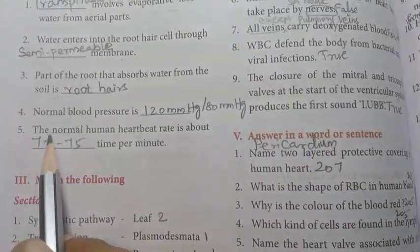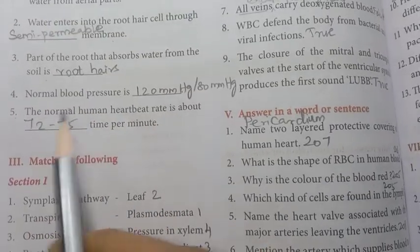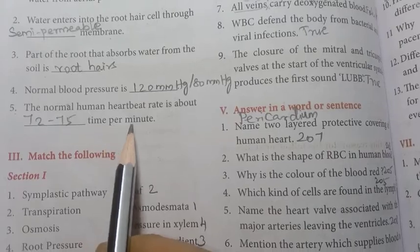Number five: the normal human heartbeat rate is about 72 to 75 times per minute.